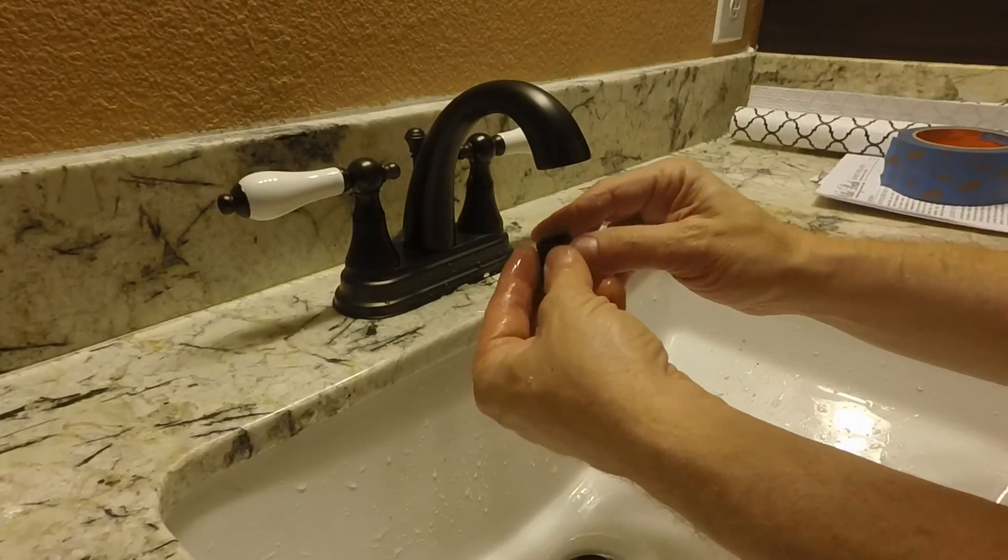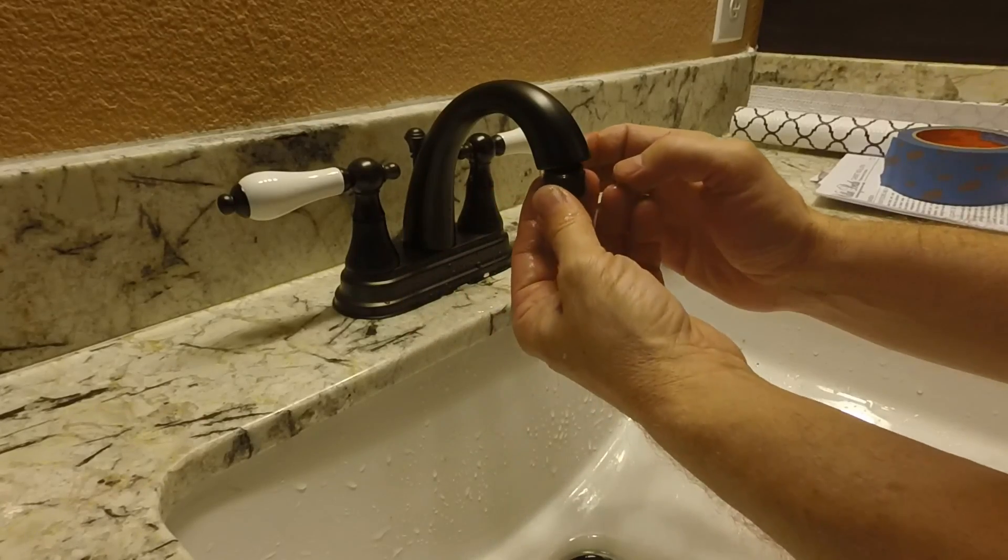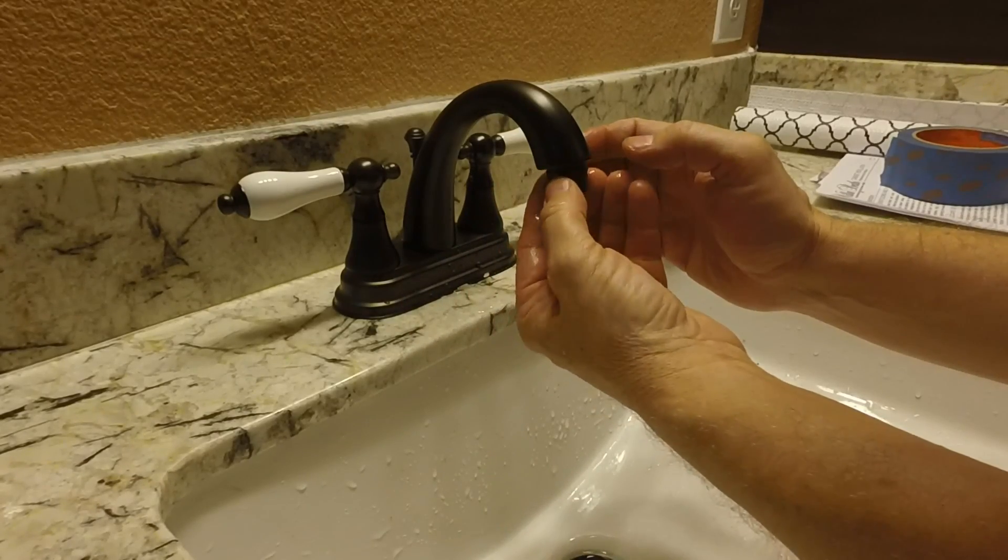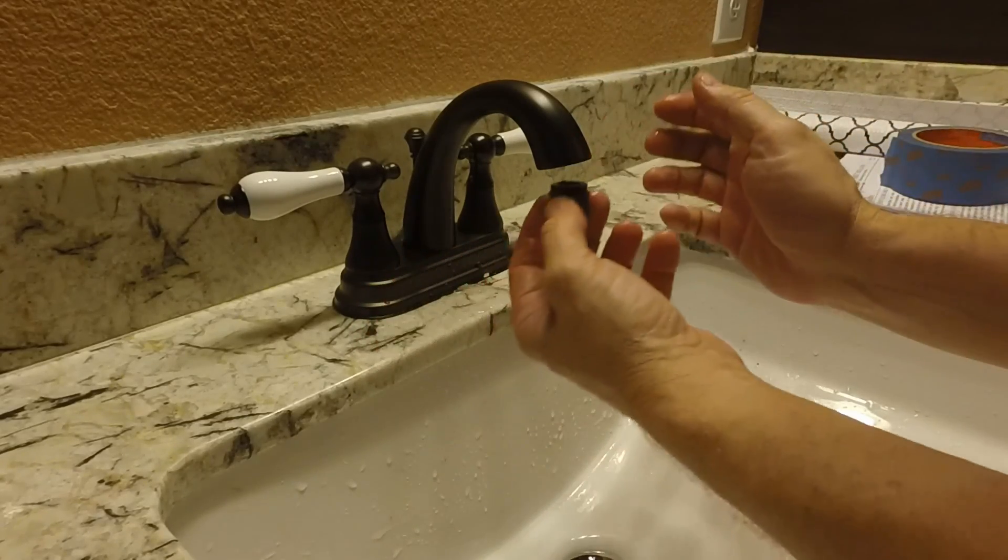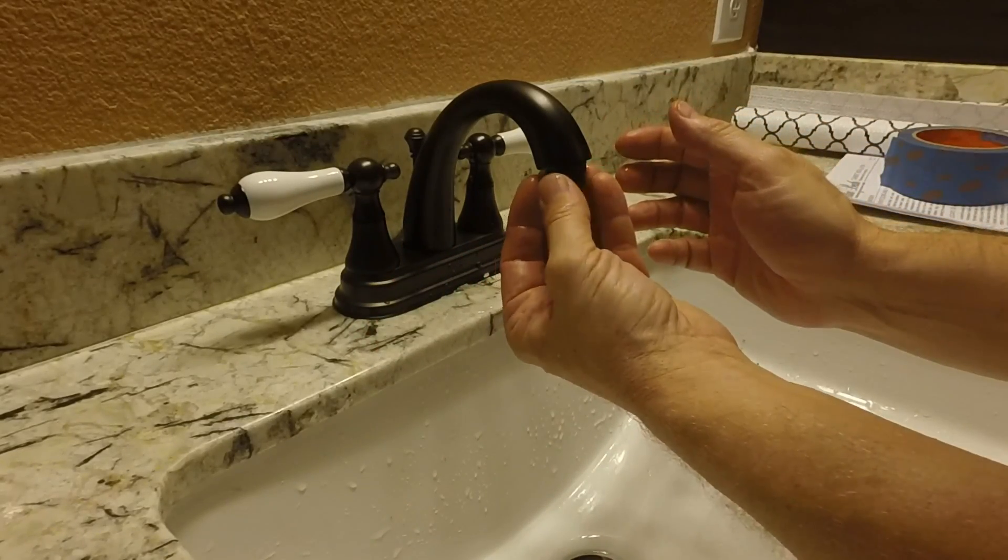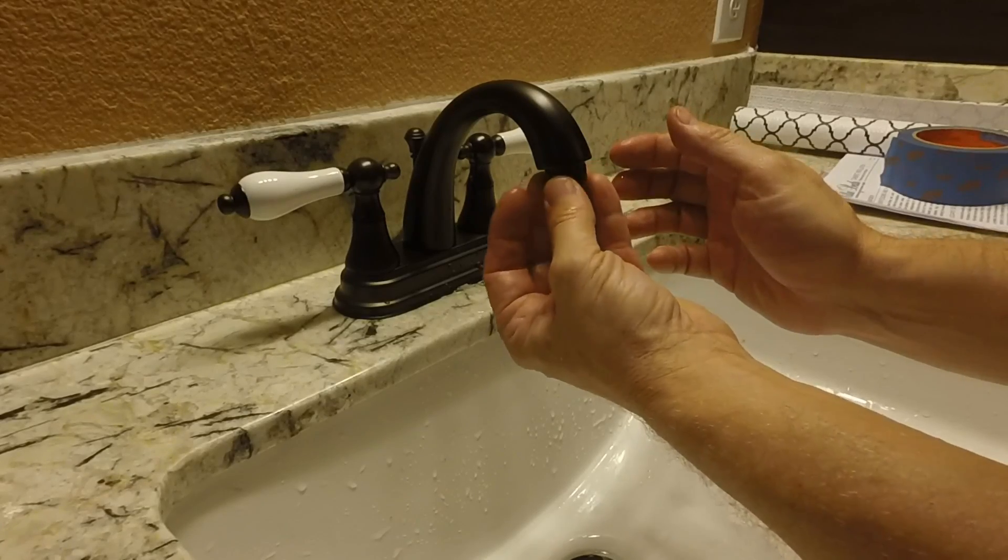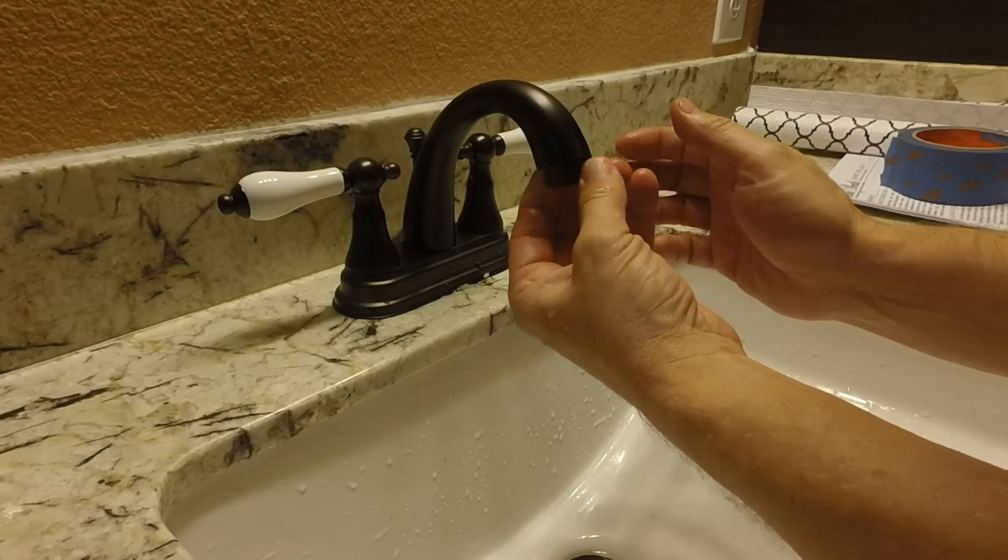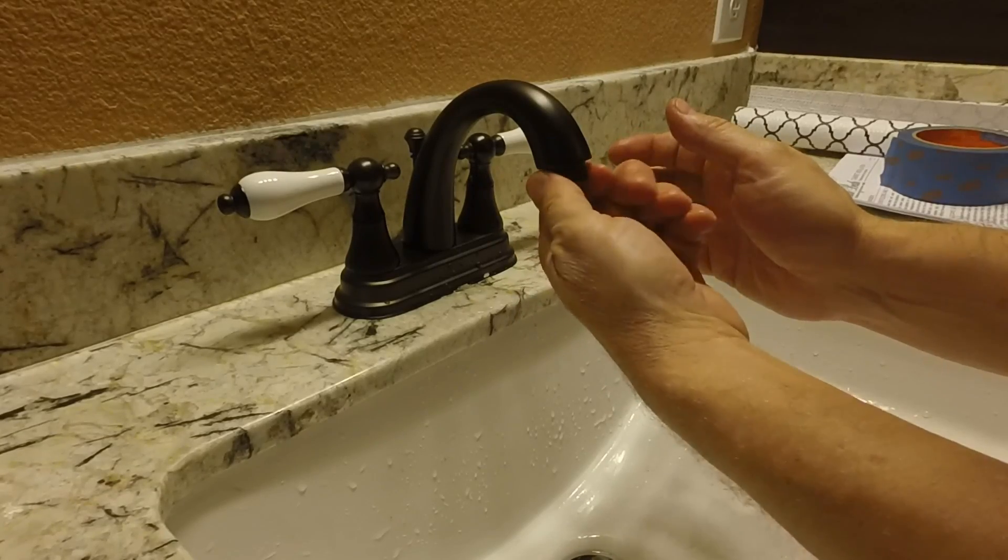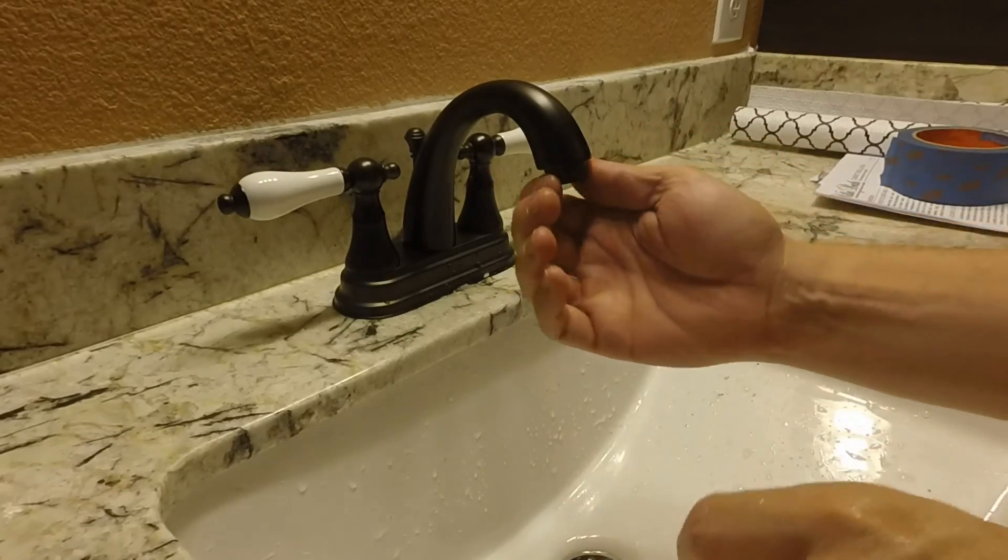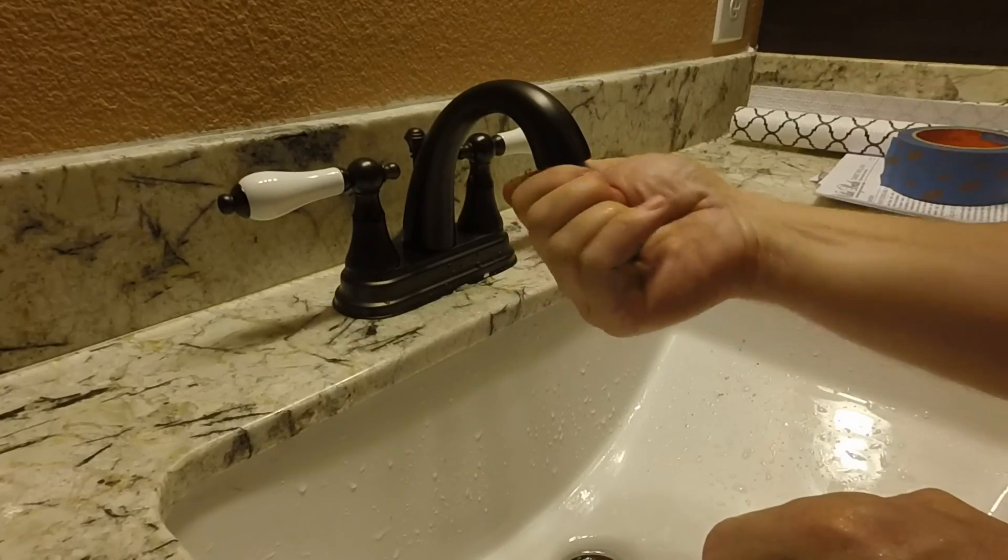And then once both sides look clear, you can put your aerator back on. And all this does is to make it more smooth going into your drain so it doesn't splatter everywhere. Just make sure that's nice and tight.